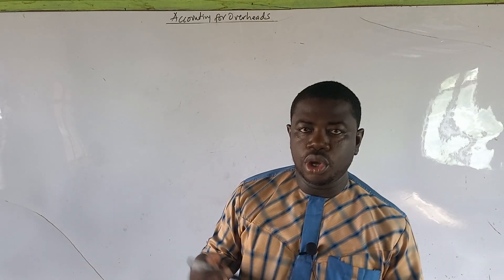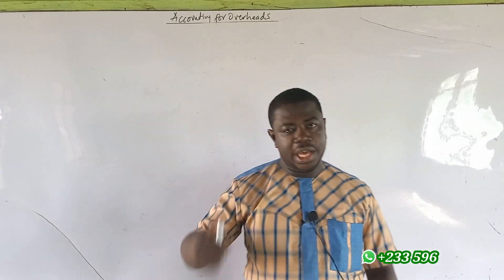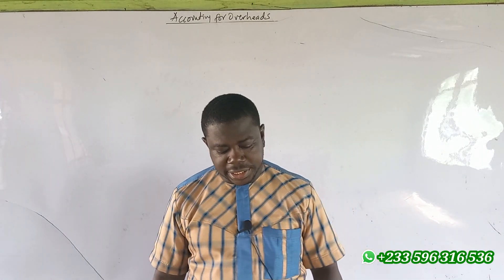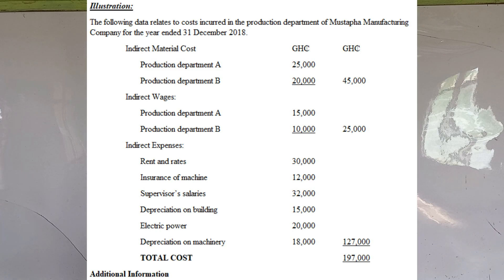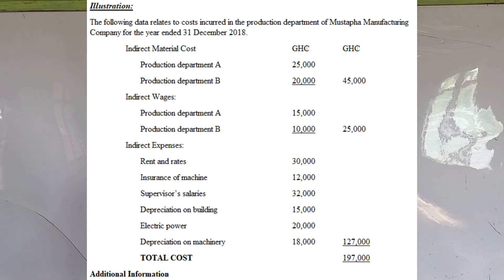Let me read the question to you. The following data relates to costs incurred in the production department of Mustafa Manufacturing Company for the year ended 31 December 2018. We have indirect material costs: Production Department A is 25,000, Production Department B is 20,000, giving a total of 45,000. Indirect wages: Production Department A is 15,000, Production Department B is 10,000, giving a total of 25,000.